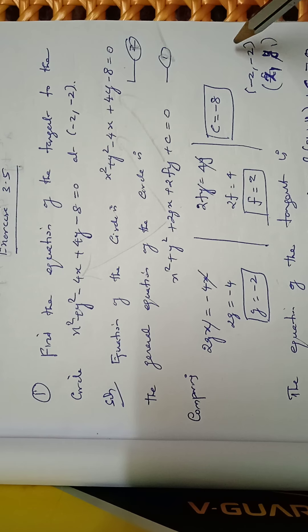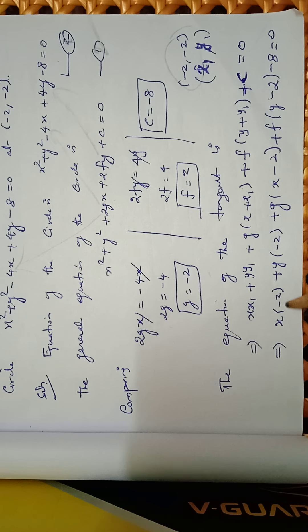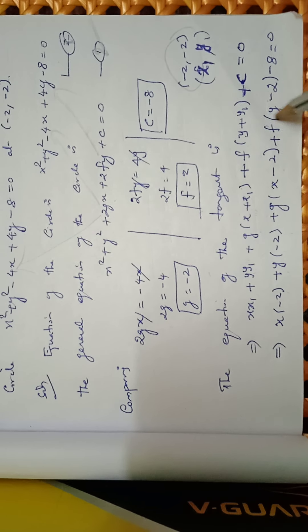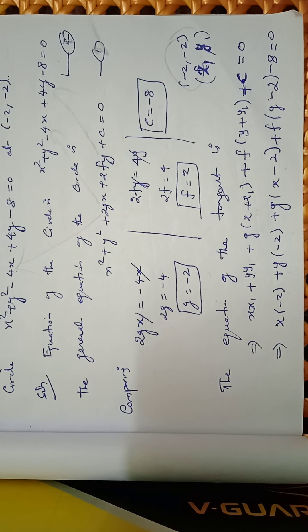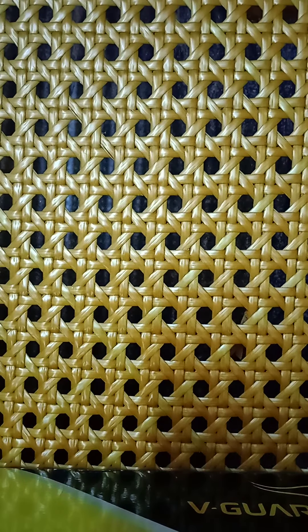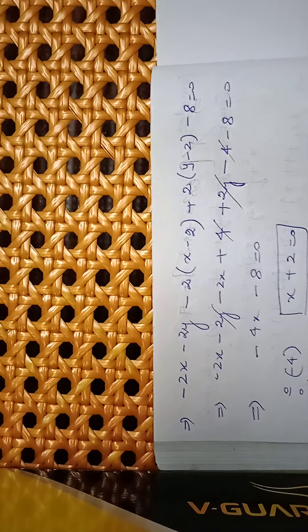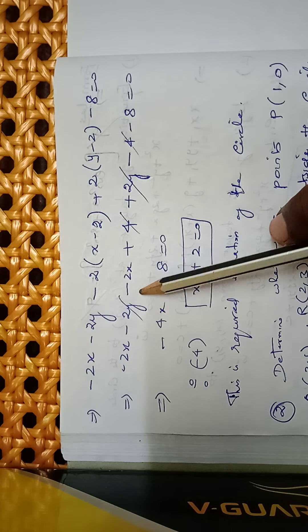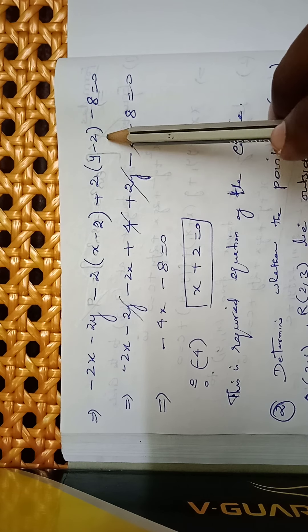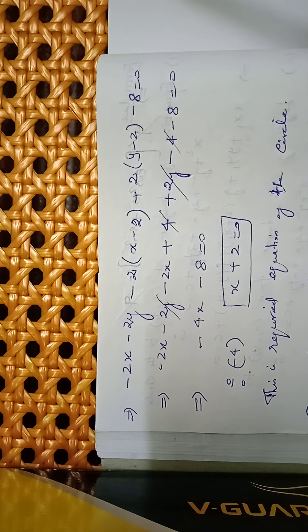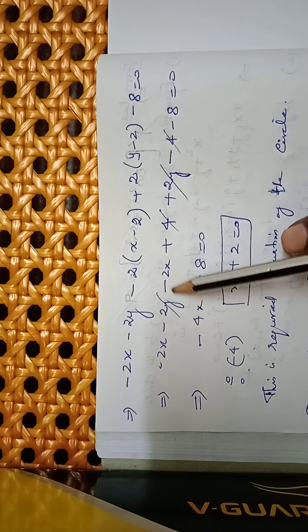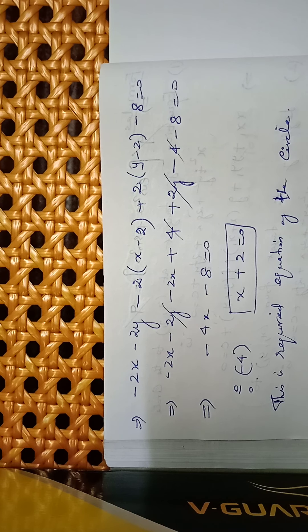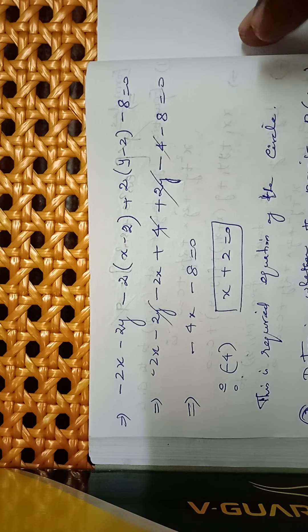The point is (−2, −2), so substituting x1 = −2, y1 = −2: x(−2) + y(−2) + (−2)(x + (−2)) + 2(y + (−2)) + (−8) = 0. Simplifying: −2x − 2y − 2x + 4 + 2y − 4 − 8 = 0, giving −4x − 8 = 0. Dividing throughout by −4: x + 2 = 0. This is the required equation of the tangent.